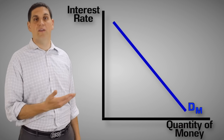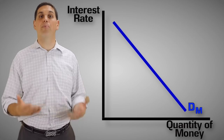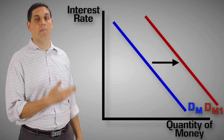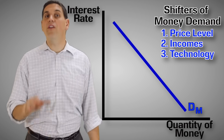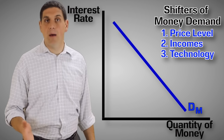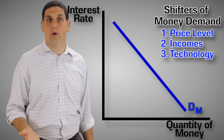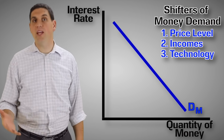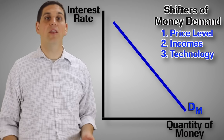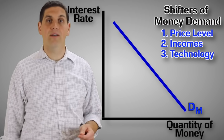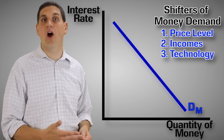Like all curves, this curve can shift. For example, if there's an increase in price level, there'll be an increase in the demand for money because people need more money for transactions. Another shifter is income — if income increases, the demand for money would also increase. Another shifter might be a change in technology in the banking system. For example, the widespread use of credit cards has decreased the demand for money because people can use their credit card instead.